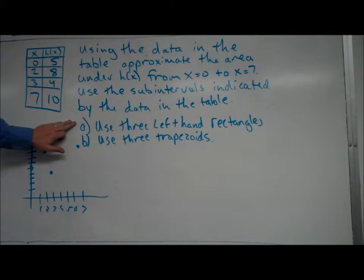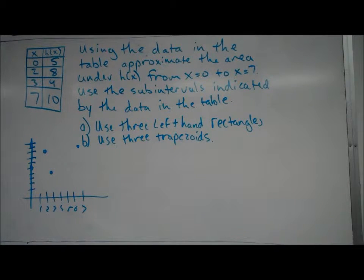So for my left hand rectangles, again you don't have to draw this out, but just to get kind of a visual here, if I were to draw this out, which I'm going to do, what it says, use the sub-intervals indicated by the data in the table. We can't have intervals of equal width in this case based on the data we're given. We're going to use the sub-intervals from 0 to 2, from 2 to 3, and from 3 to 7. So our first rectangle will have a width of 2, our second one will have a width of 1, and our last one will have a width of 4.